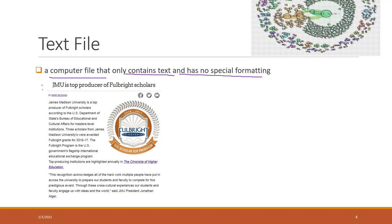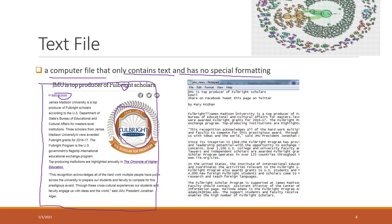On the left side is an example of an HTML web page where you can see formatting like size, URLs, and images. On the right side is how a text file looks — without any formatting, all text has the same size and font, images are removed, and URLs are not included.